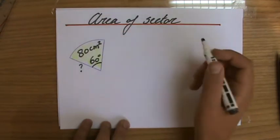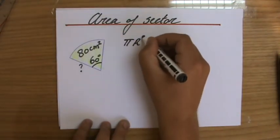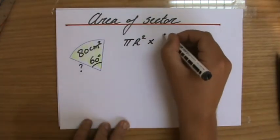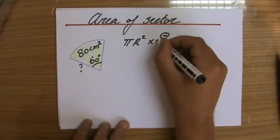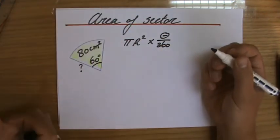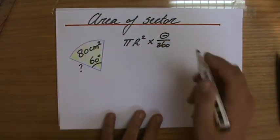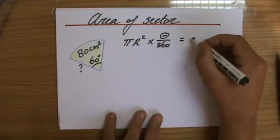Now what do we know? We know to find this sector area we do the total area of a circle, πr², and then we times that by the fraction of the circle we are interested in, which is always a particular angle out of 360 because that is the total amount of degrees in a full turn, and that always equals the sector area.